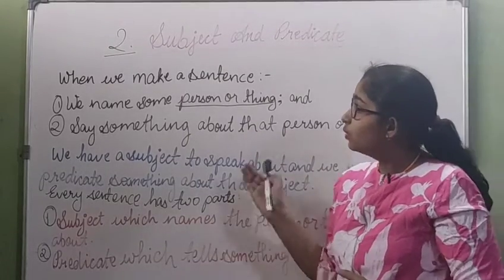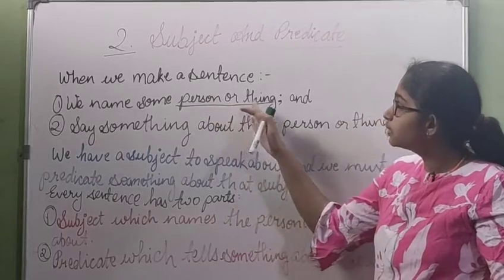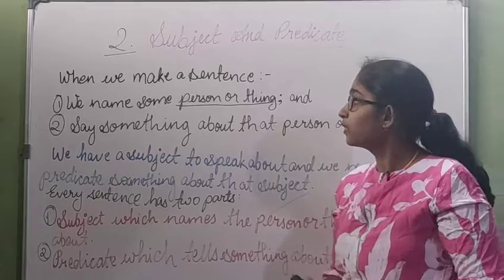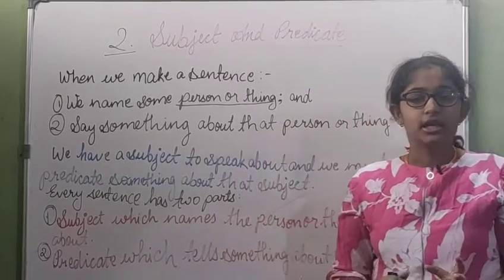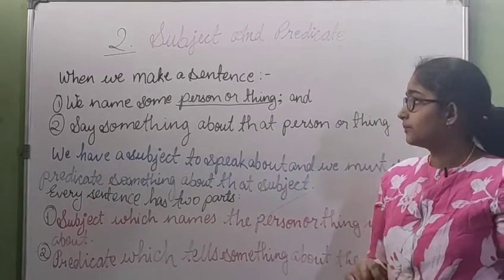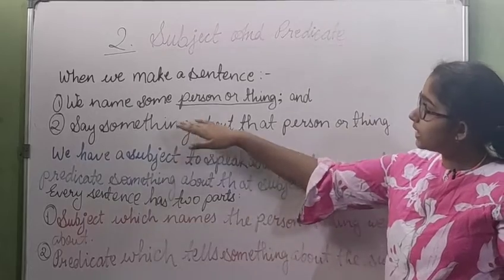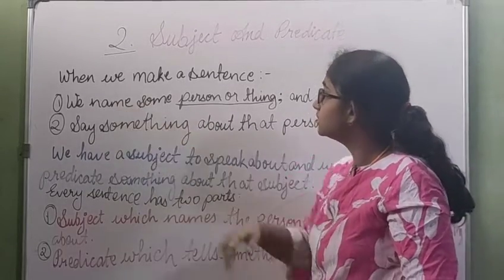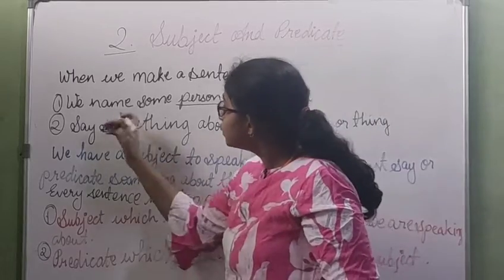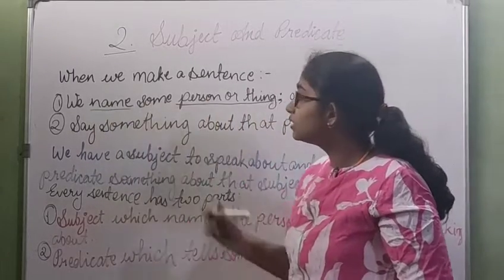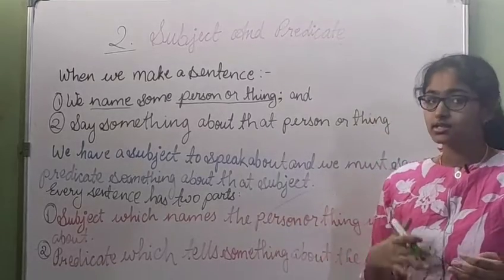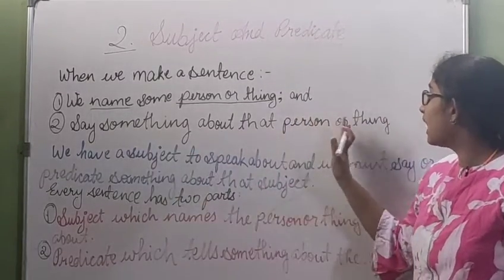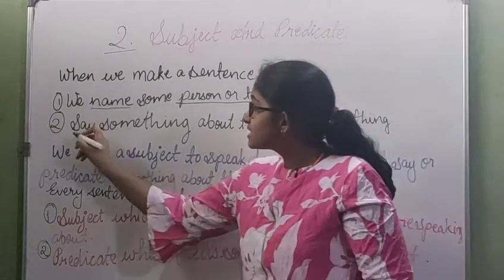When we make a sentence, we name some person or thing and say something about that person or thing. When we make a sentence, we do two things. Mainly, we name some person or thing.